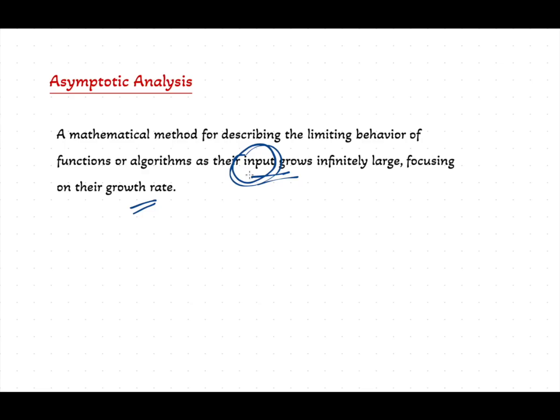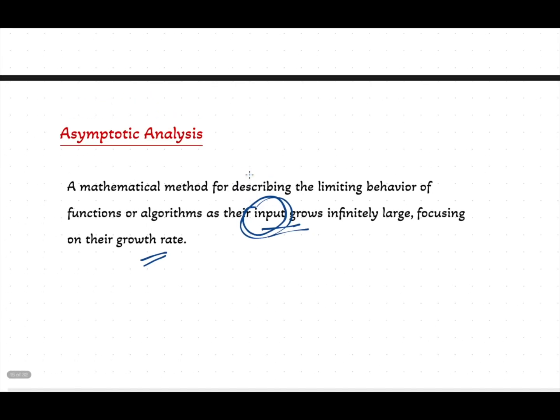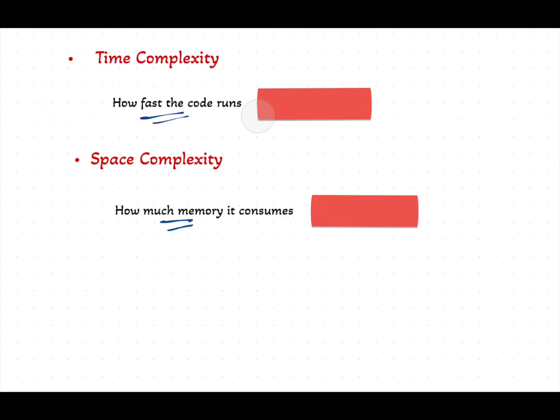Why? Because the input is the only thing that affects performance in the long run. So if we go back to our definitions, time complexity means how fast the code runs as the input grows and space complexity means how much memory it consumes as the input grows.